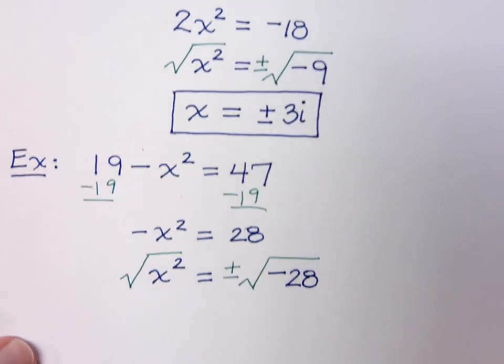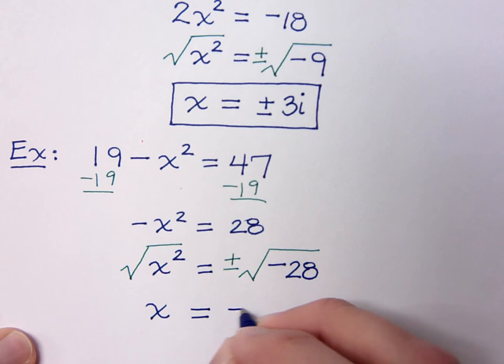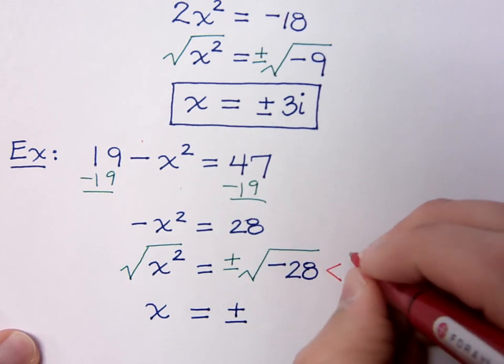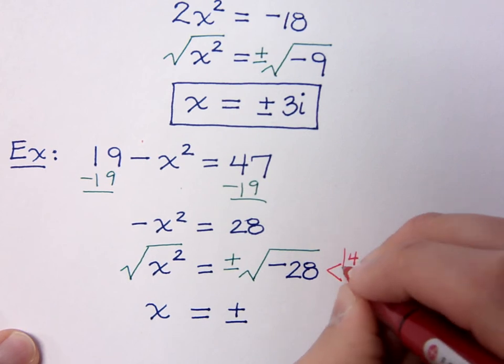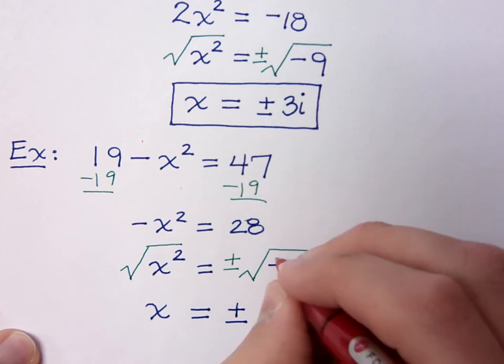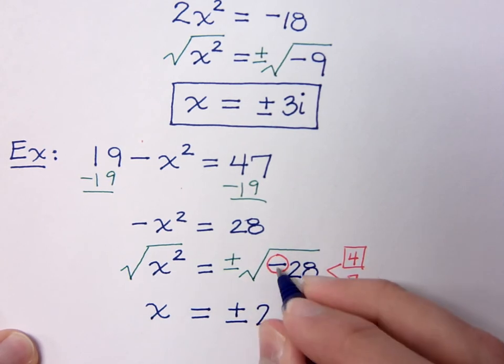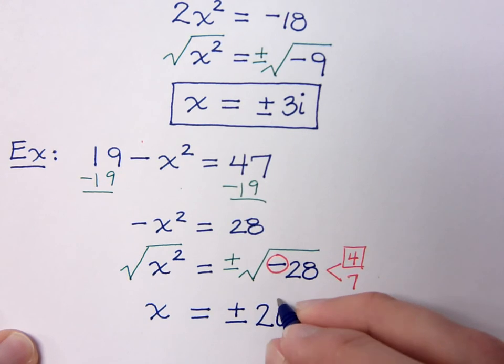Now, we just need to finish solving this guy. So, x is equal to plus or minus. So, this guy can be kind of difficult. 28 is not a perfect square, so we need to break this guy down. 28 will break down to be 4 times 7. 4, of course, being your perfect square. That's going to give you the 2. But you also have this guy right here. So, the square root of 4 is 2. The square root of the negative is going to come out as the i. And the only guy who can't come out is the 7.